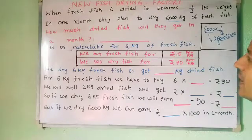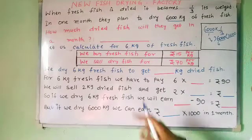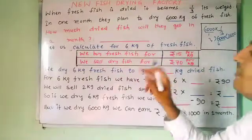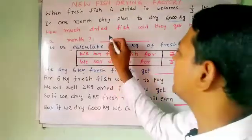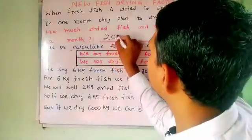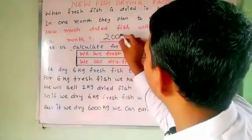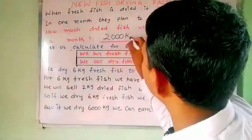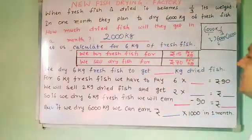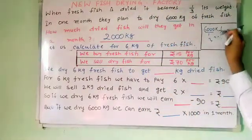6000 divided by 3 gives you 2000. So if you dry 6000 kg of fresh fish, how much dried fish will you get in one month? You get 2000 kg of dried fish in one month.